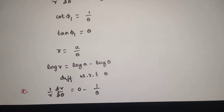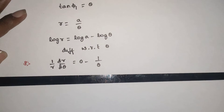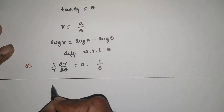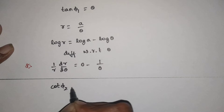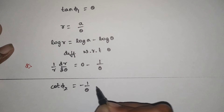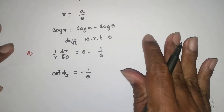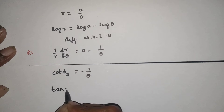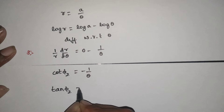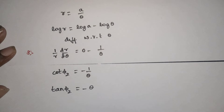Differentiating further, we get 1/r times dr/dθ is equal to minus 1/θ. Therefore, cot φ₂ equals minus 1/θ, so tan φ₂ equals minus θ.